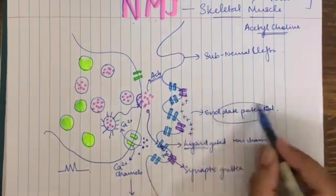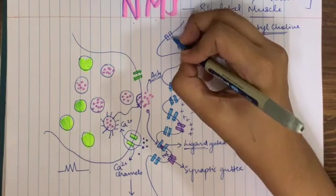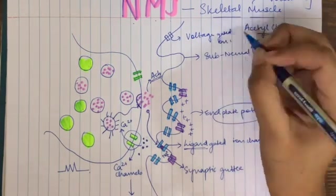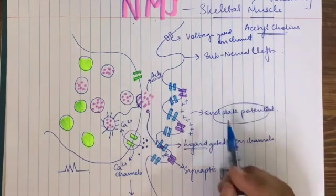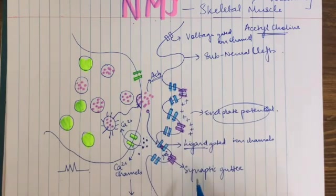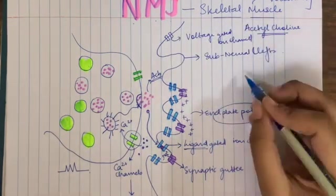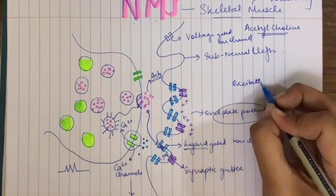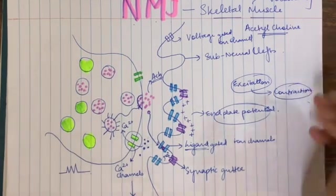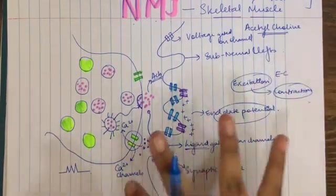This end plate potential triggers many more sodium channels to open up — these are known as voltage-gated ion channels. The stimulus here is the change in membrane potential from negative to positive due to the influx of sodium, and that causes more and more sodium channels to open up, leading to excitation of a muscle fiber, which in turn leads to contraction of the muscle fiber. This is known as EC coupling.